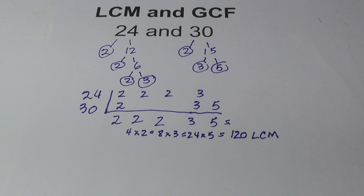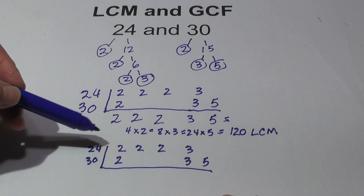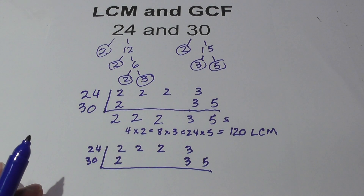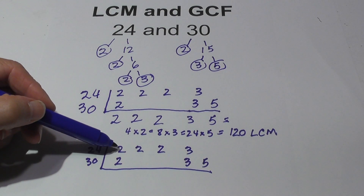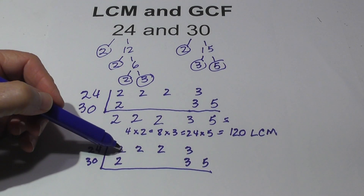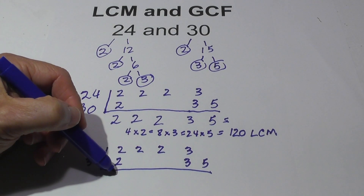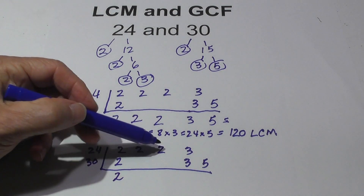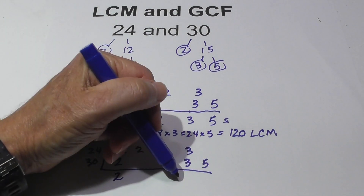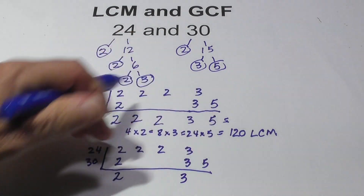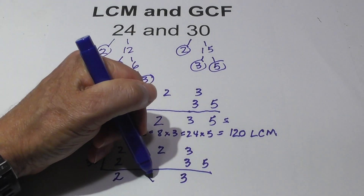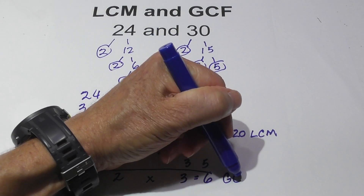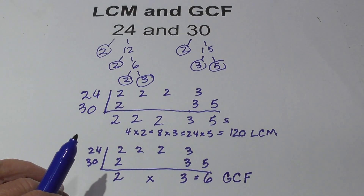Now we're going to find the GCF. I've rewritten the chart. The rule for the GCF is you need to find a prime factor that is found in both numbers. The 2 is found in both, so I bring one 2 down. The extra 2s are in 24 but not 30. The 3 is in both, and the 5 is not. So I multiply these together: 2 times 3 equals 6. The GCF equals 6.